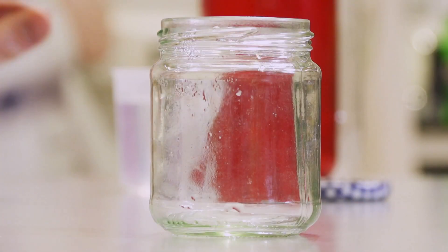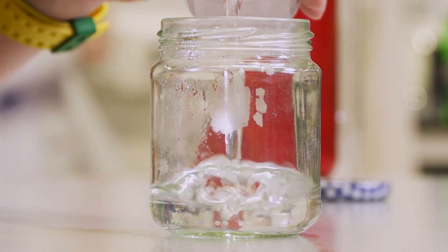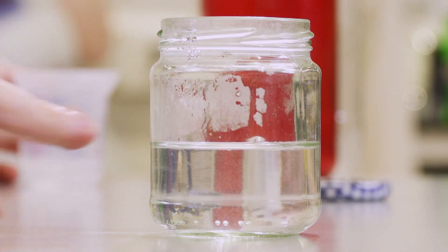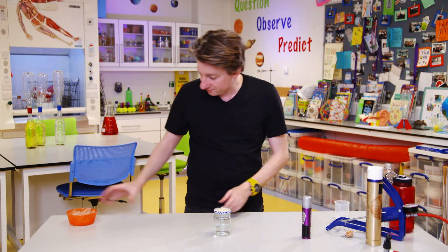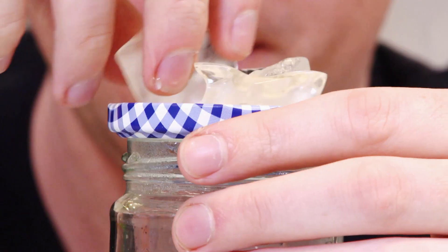First thing first is we're going to take our jar and we're going to add some hot water to it. Now get help with this, it needs to be pretty hot, not boiling, but get help with this from a responsible adult. We're going to put our lid on top of that, and then we're going to take some ice and we're going to put that on top of the jar.